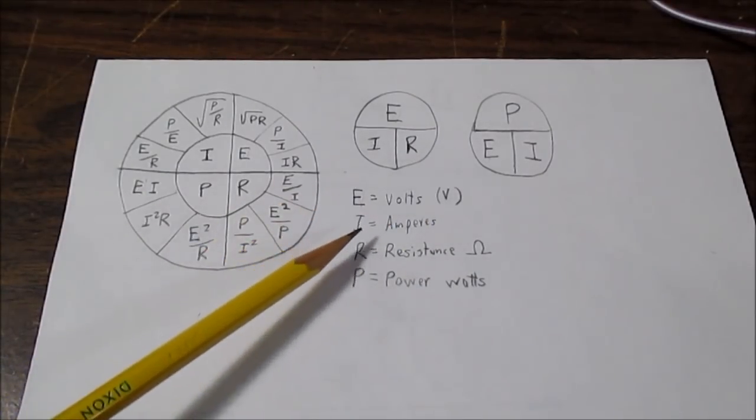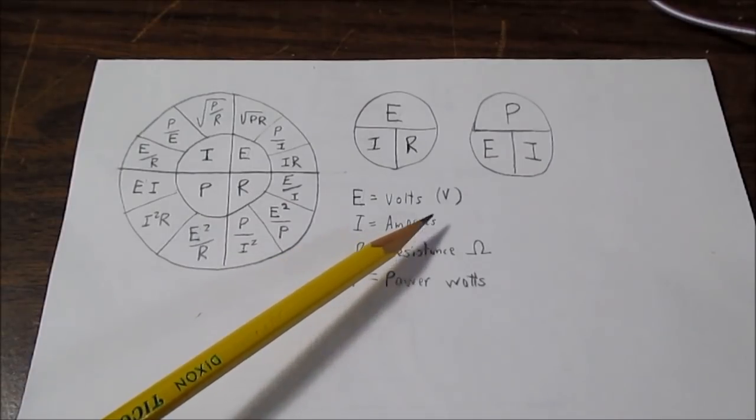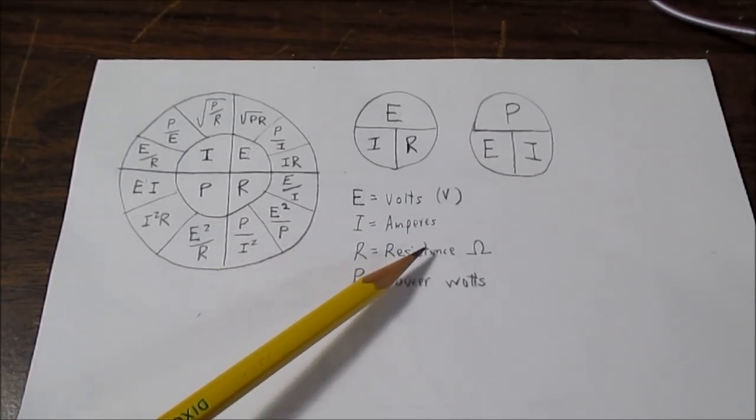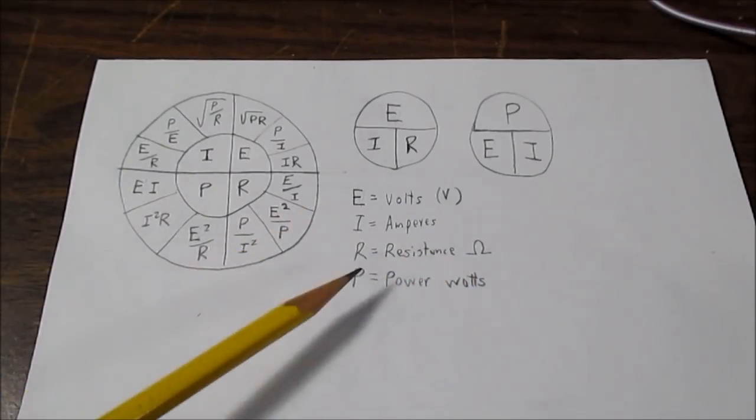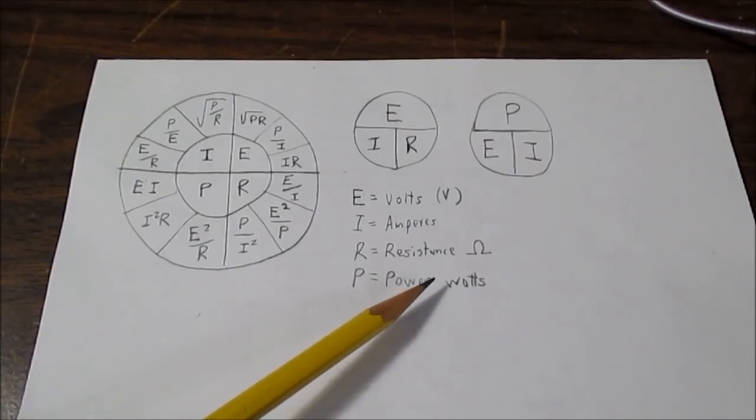R for resistance, sometimes omega symbol is used. And P for power in watts.